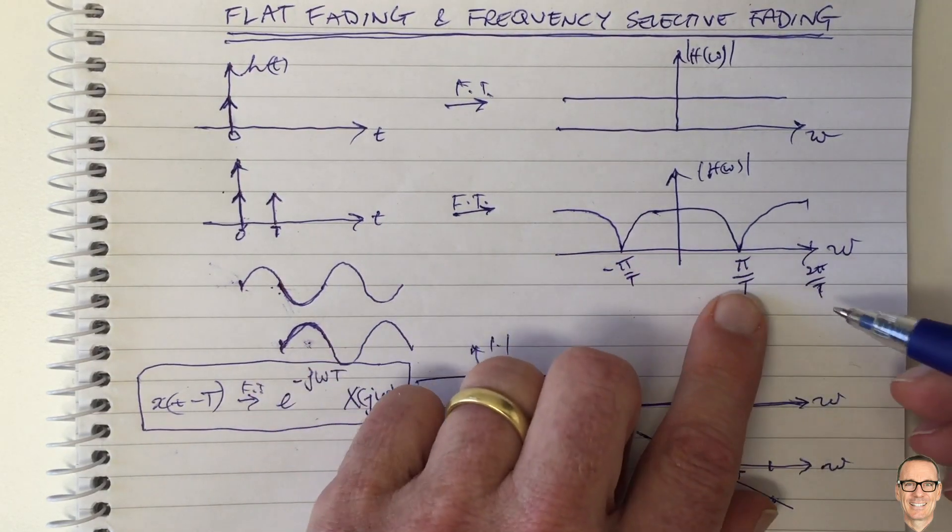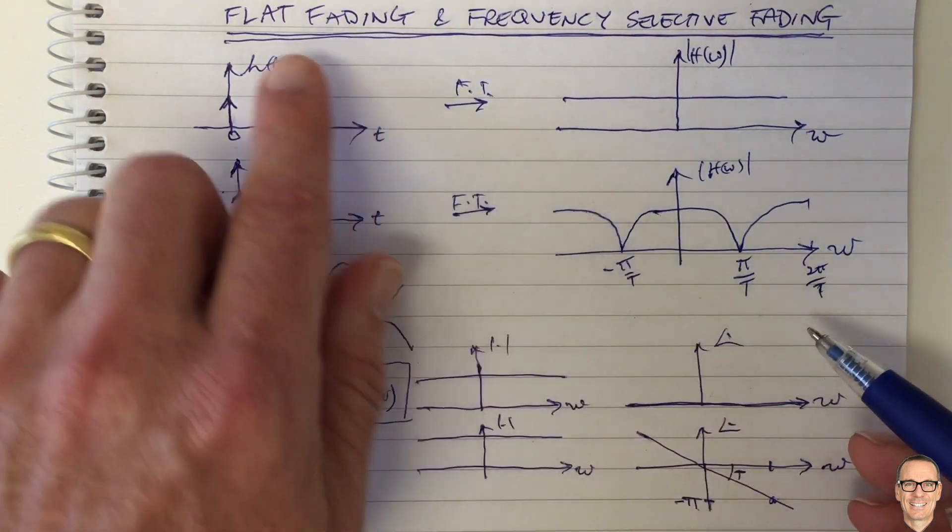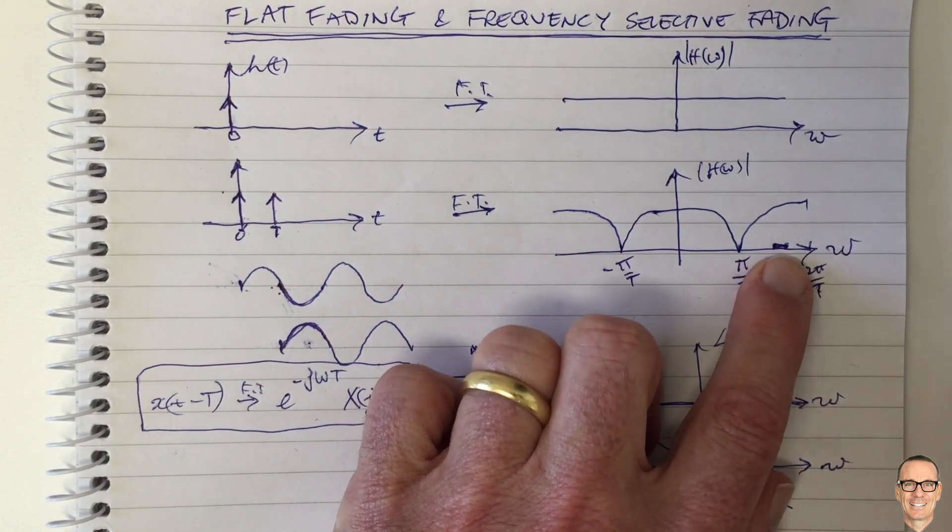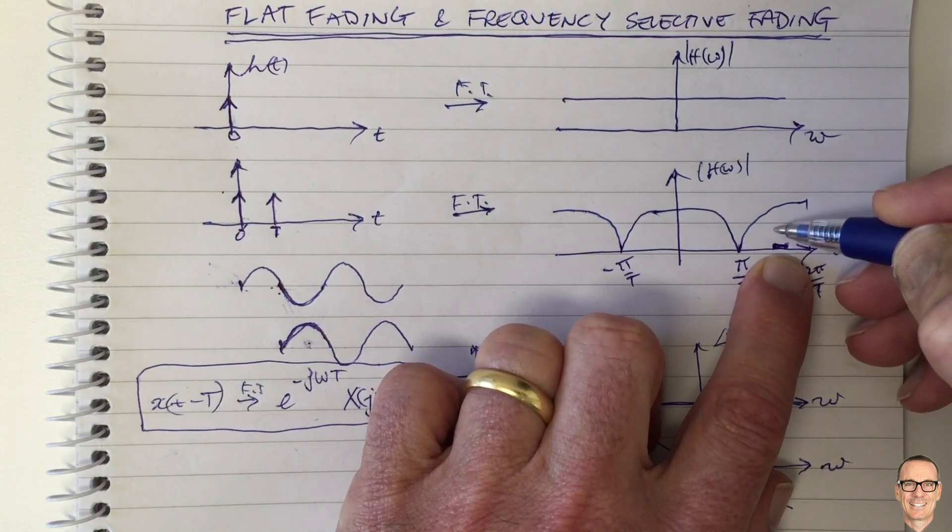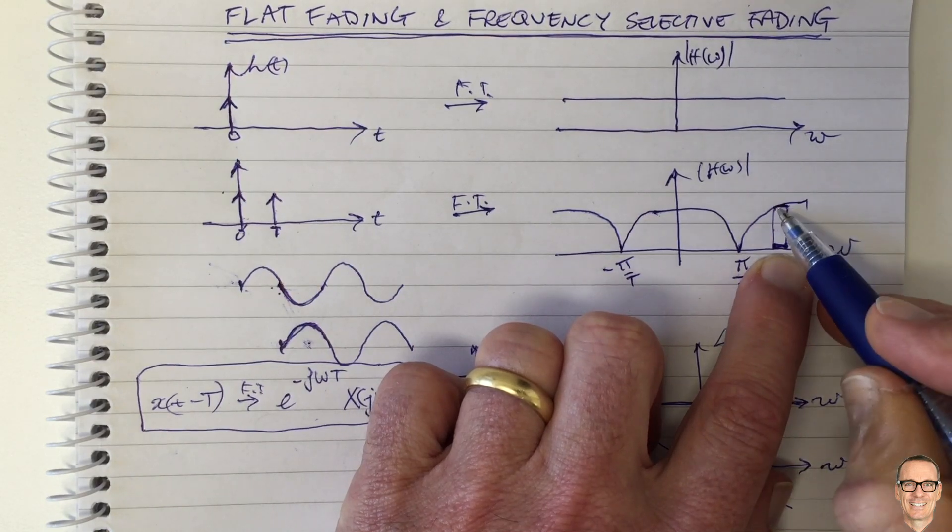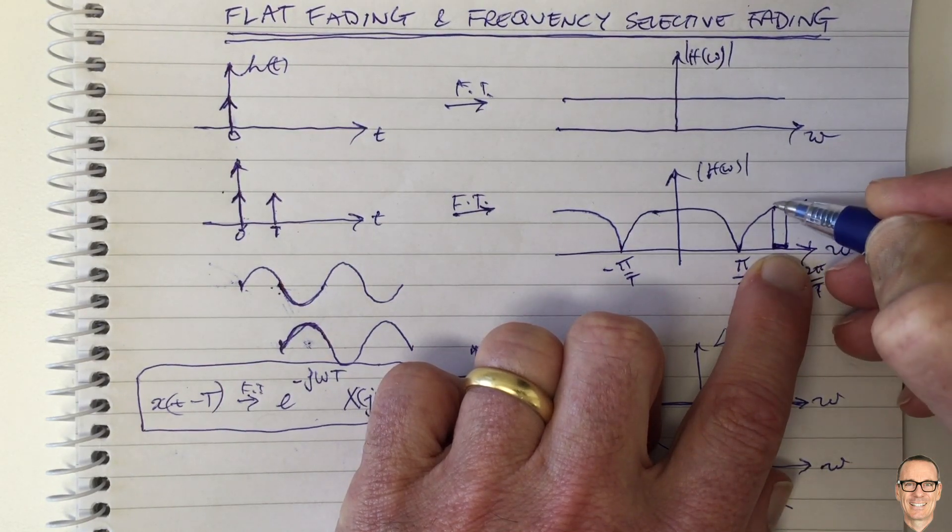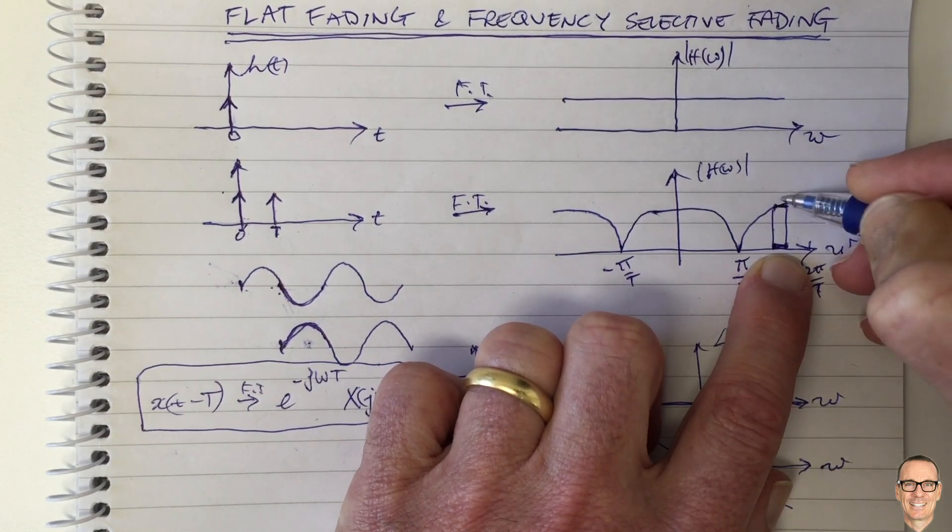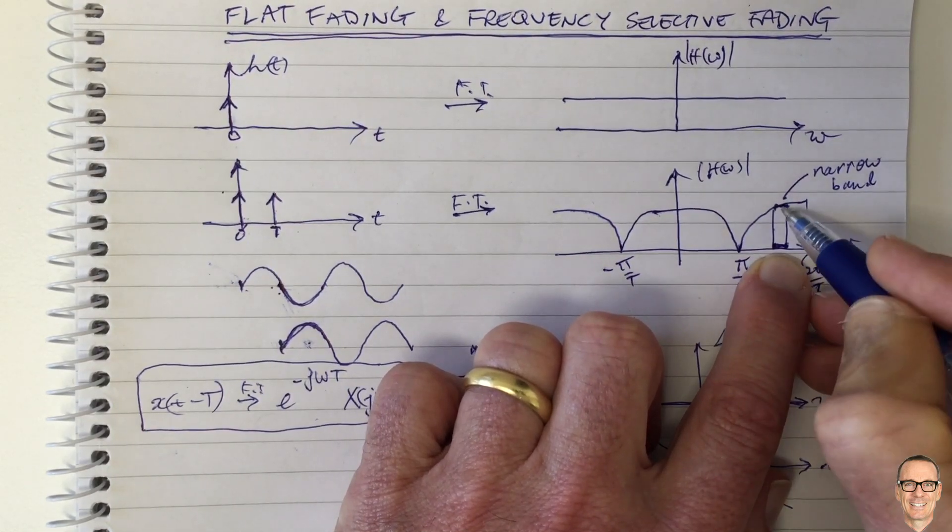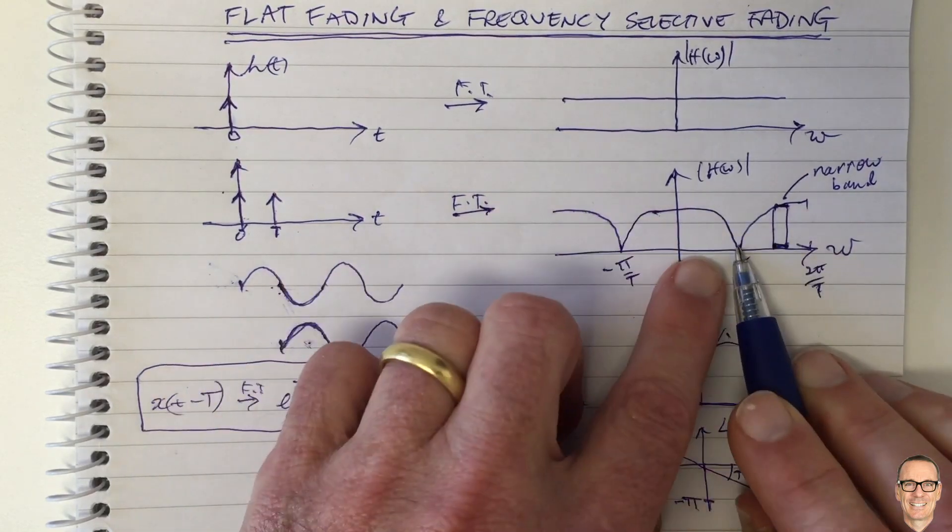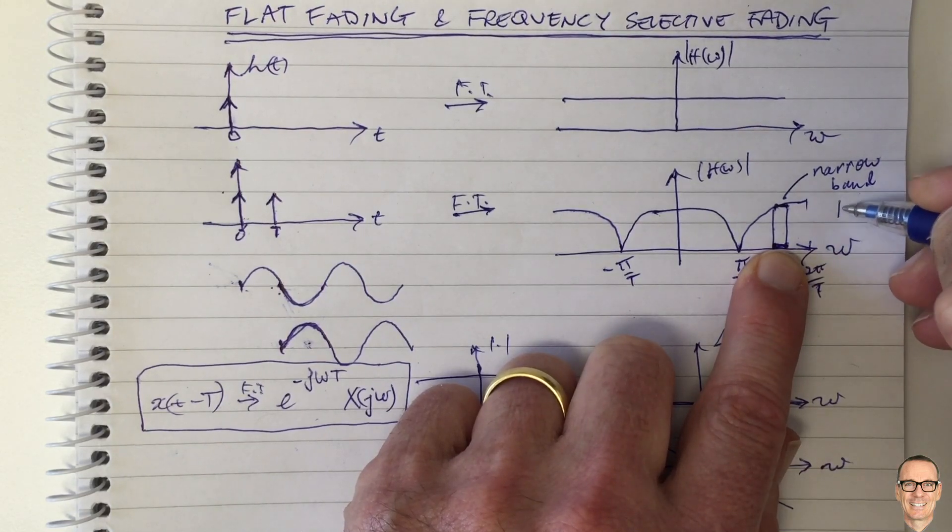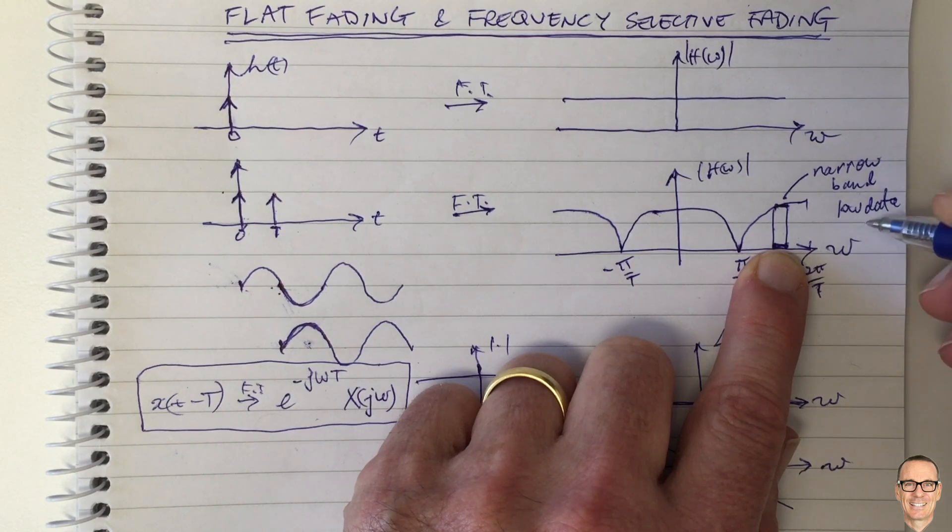And so therefore your communication system may still be able to operate with flat fading. So for example, if you only chose to use this frequency band for your channel of your communication signal, and you fitted your entire communication signal into just this frequency band, then you would only be experiencing this portion of the channel. And then that would be essentially flat. So this is narrow band. If you have narrow band communications, then you tend to have flat fading, even if the overall channel has these notches in it. So narrow band communication, and that means low data rate.